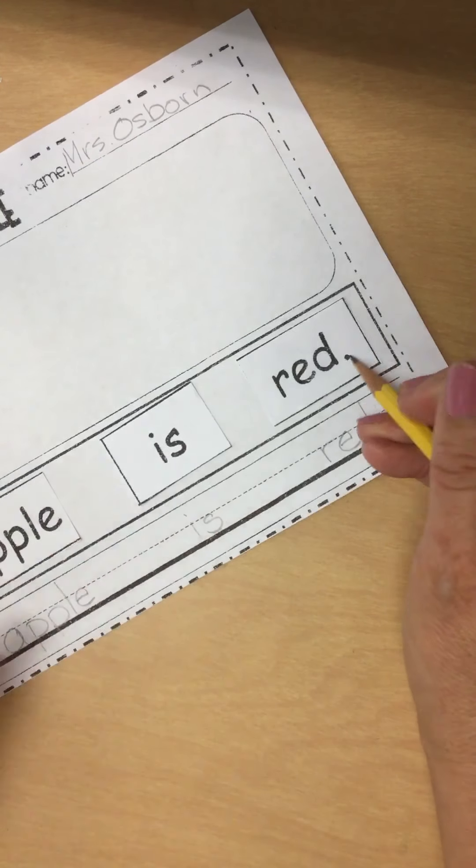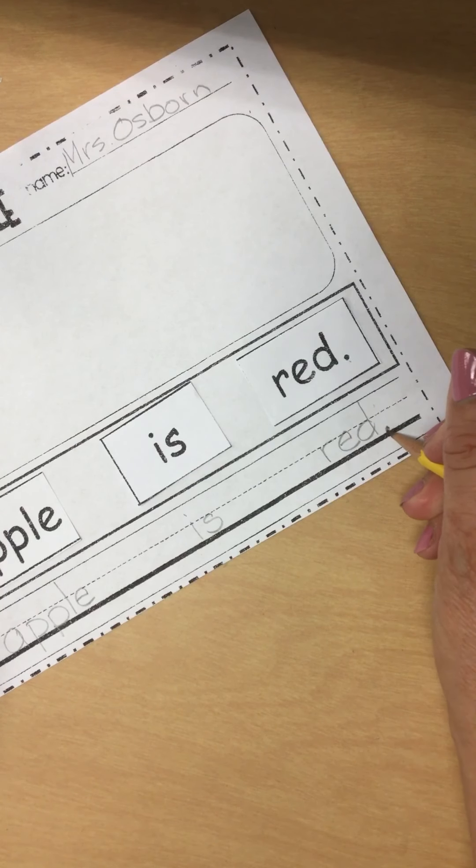And don't forget what goes at the end of a sentence. That's right, a period, right, sitting on that bottom line, little tiny dot.